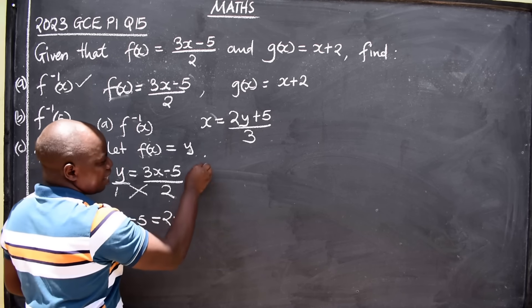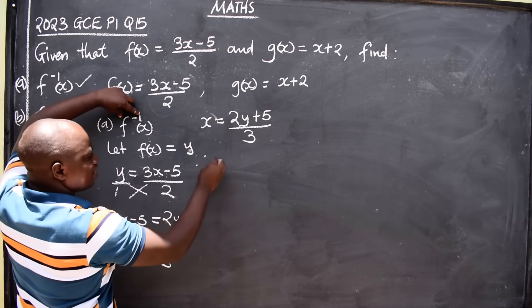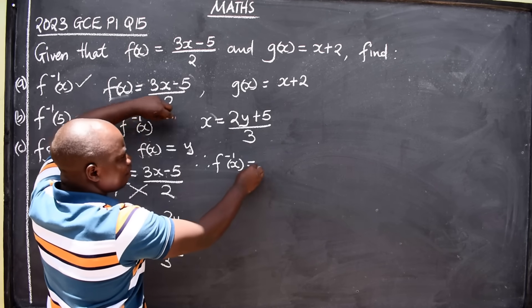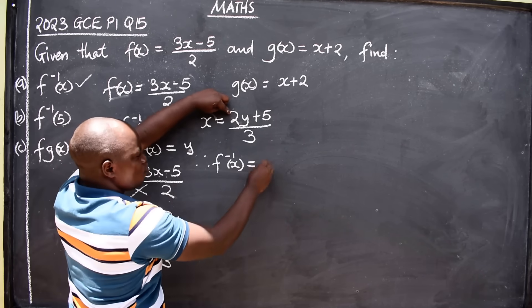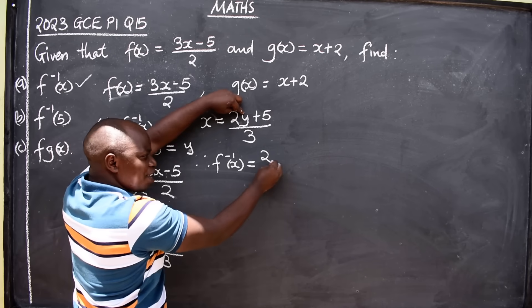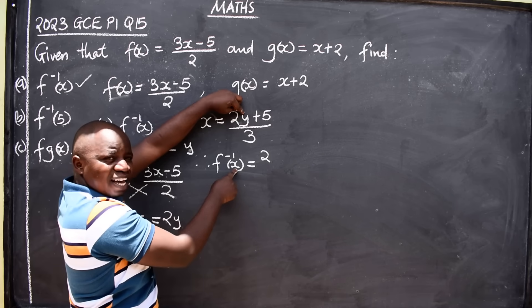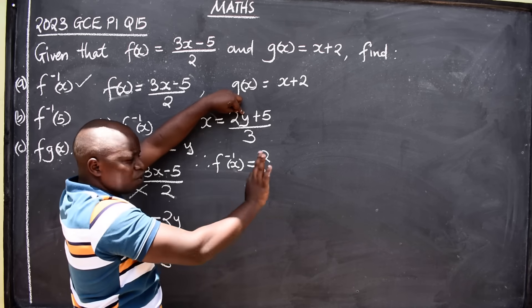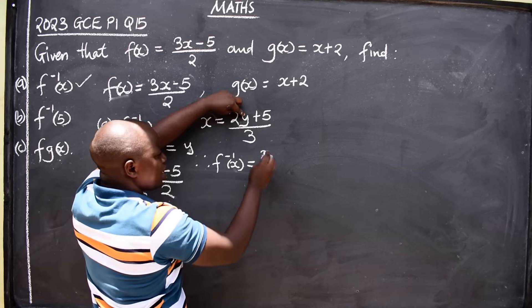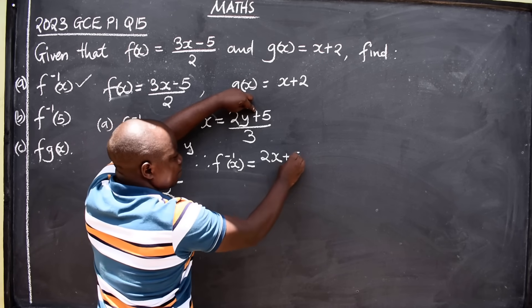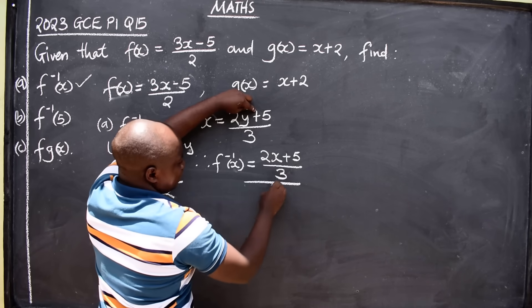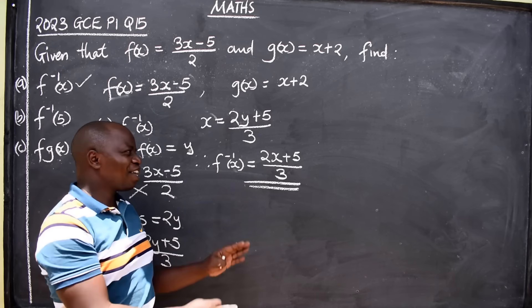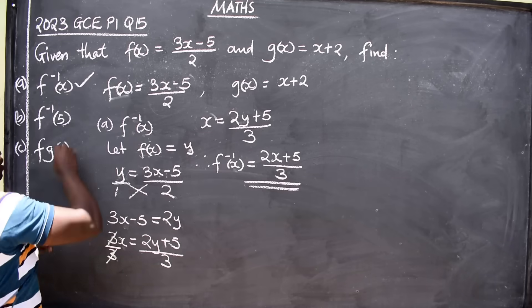Now that x is the subject of the formula, we say: therefore, the inverse of the function f⁻¹(x) equals (2x + 5)/3. We go back and substitute x in place of y — where there is y, put x, and don't change anything else. So f⁻¹(x) = (2x + 5)/3. That is how we find the inverse. We have answered the first part.